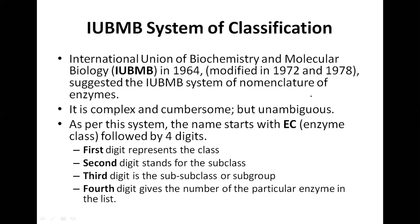As we discussed in the last lecture, enzymes are assigned an EC number, which stands for enzyme class number, and it has four digits. The first digit represents the class, the second digit represents the subclass, and the third digit represents the sub-subclass or group.